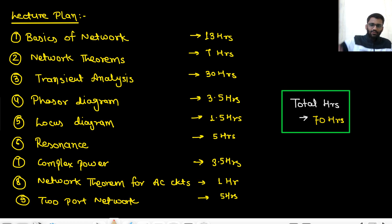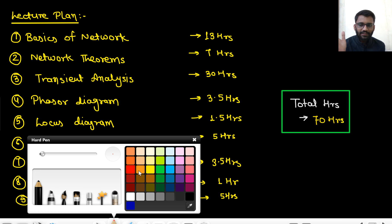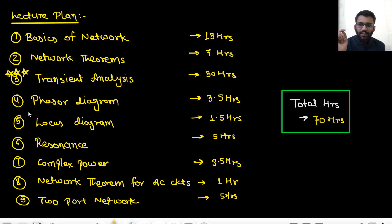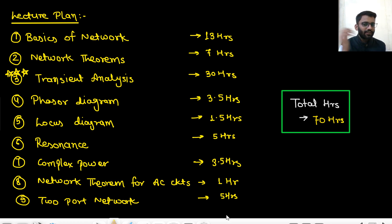We will cover everything from basic concepts through all our chapters. First, basics of network — around 13 hours; then network theorems — around 7 hours; then transient analysis, which is the most important topic, highly used in analog as well. Then phasors in 3.5 hours, locus in 1.5 hours, resonance in 5 hours, complex power in 3.5 hours, network theorems for AC circuits in 1 hour, and two-port networks for 5 hours.